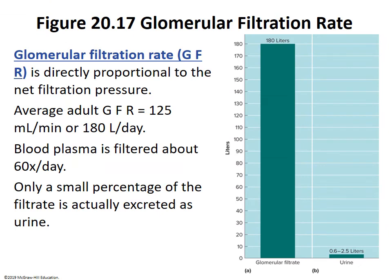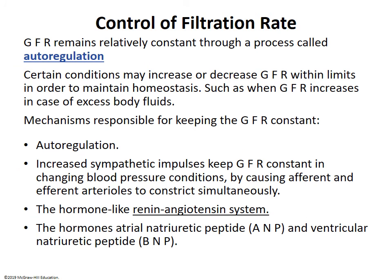The filtration rate is remarkable — 180 liters per day, equivalent to 90 two-liter bottles every 24 hours filtered through your kidneys. On average, your blood is filtered 60 times a day. Only a small percentage becomes urine; the majority is reabsorbed through tubular reabsorption.